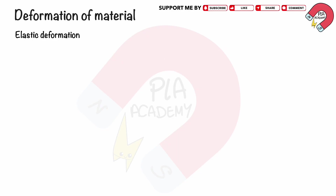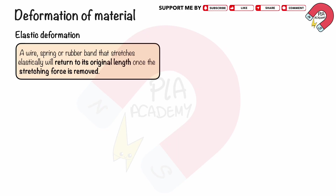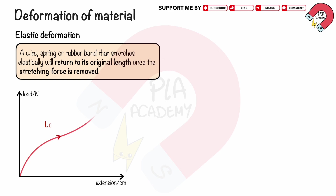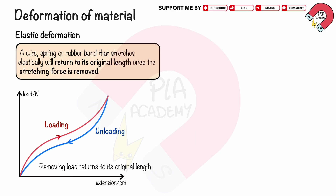Elastic deformation: a wire, spring or rubber band that stretches elastically will return to its original length once the stretching force is removed. The graph of the applied force against the extension shows that when loading, the graph follows one path, and when unloading, it follows the same path back. This shows that the material returned to the original length when the load is removed. This is called elastic deformation.